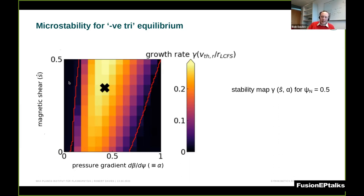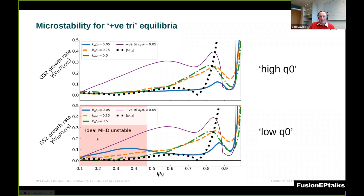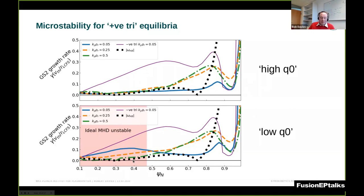Now let's look at results for the positive triangularity equilibria. I have the same growth-rate-versus-radial-position plots: in the top the high q0 case, in the bottom the low q0 case, with the purple line from the negative triangularity equilibrium for comparison. What one notices straight away is that the growth rates in the positive triangularity equilibria are much lower than in the negative triangularity case, and across much of the plasma they are comparable to the estimated E×B shearing rate — which is good news.